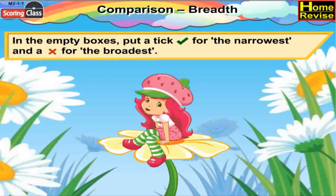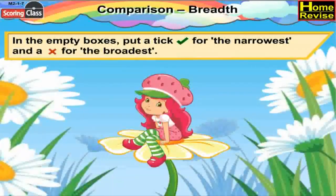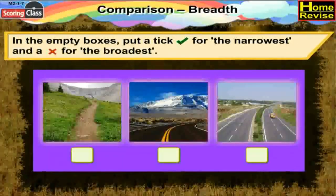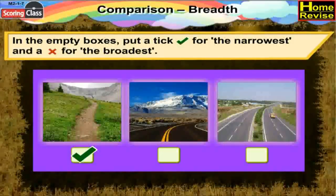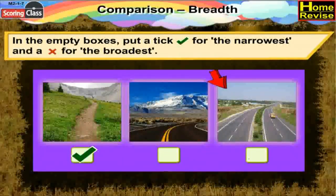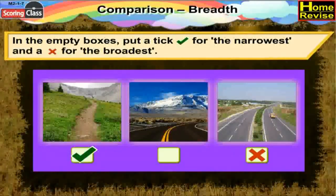In the empty boxes, put a tick for the narrowest and a cross for the broadest. Here are three types of roads. Which one is the narrowest? You're right, my genius — the first road is the narrowest. And the third type of road has six lanes, so it is the broadest. Put a tick in the box in front of the first road, which is a single lane, and put a cross in the box in front of the third road, which is a six-lane road.